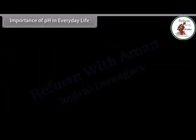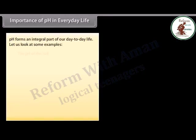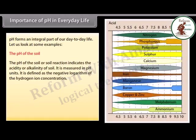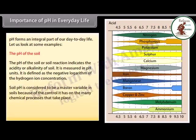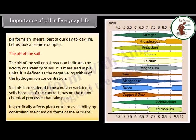Importance of pH in everyday life: the pH of the soil indicates the acidity or alkalinity of soil, measured in pH units. It is defined as the negative logarithm of the hydrogen ion concentration. With the increase in the amount of hydrogen ions in the soil, the soil pH increases, leading to more acidity. Soil pH is considered a master variable in soils because of the control it has on many chemical processes, specifically affecting plant nutrient availability by controlling the chemical forms of the nutrient.